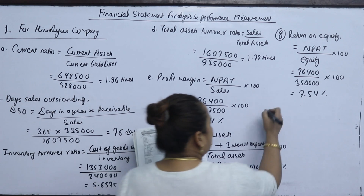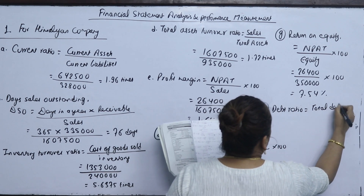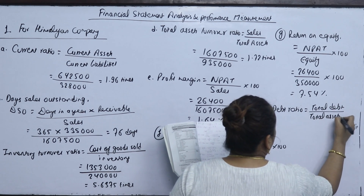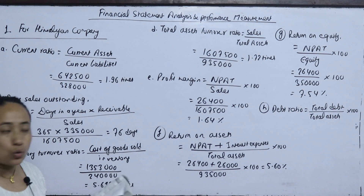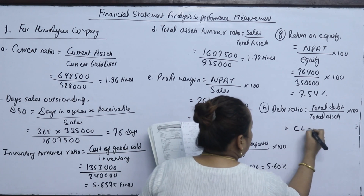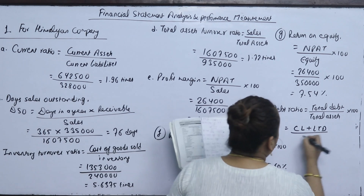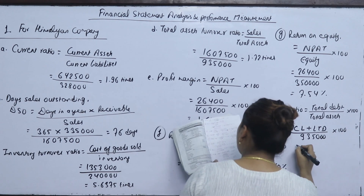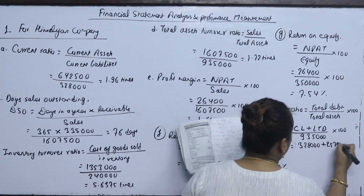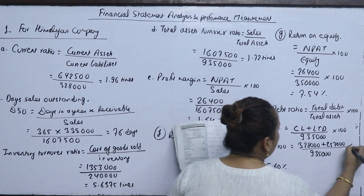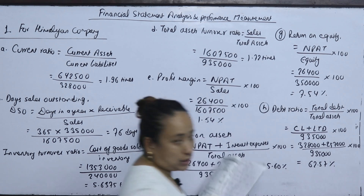The last ratio is the debt ratio — debt to assets. The formula is total debt divided by total assets, multiplied by 100. Total debt includes current liabilities of 3,23,000 and long-term debt of 2,57,000, divided by total assets of 9,35,000. Debt ratio is 62.57%.